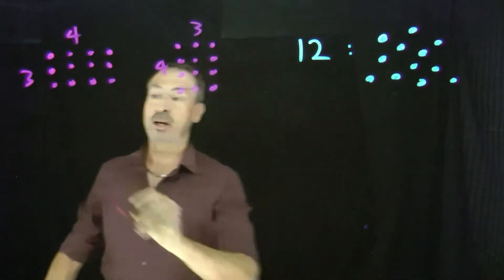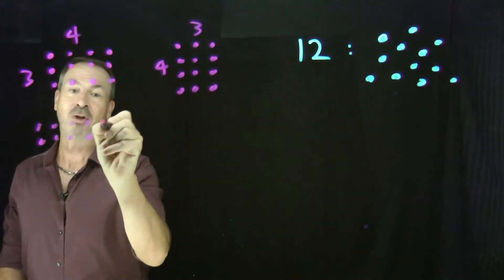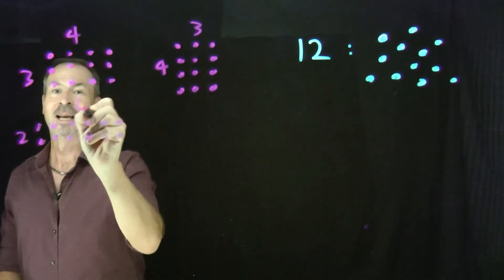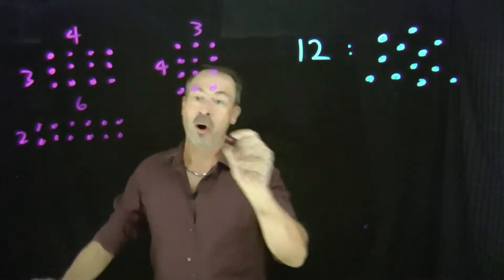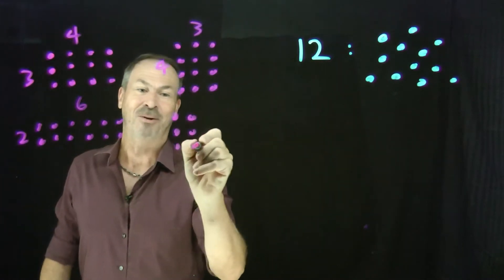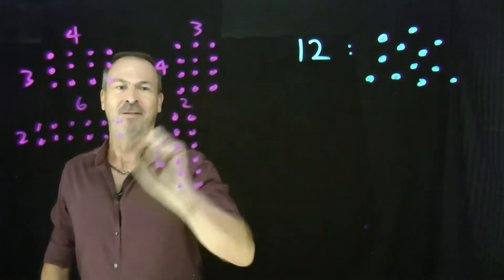I can also do a 2x6 rectangle. Here goes. 2x6, there it is. That is, 12 dots also make a 2x6 rectangle. Or turn around a 6x2 rectangle. Lots of different options with 12 dots. This is kind of marvelous.